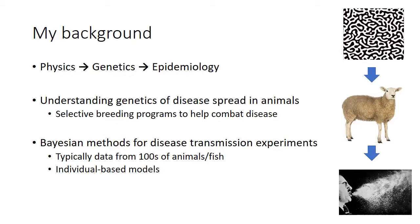Part of my work here is spent on trying to understand the genetics of disease transmission in animals, and in particular trying to promote the idea of using selective breeding to reduce infectivity as an effective way to help combat disease. As part of this work, we've developed new individual-based Bayesian methods to analyse data from disease transmission experiments. However, these methods are typically applied to perhaps a few hundred animals or fish, and so prior to RAMP, we had not tackled anything on the same scale as COVID-19.